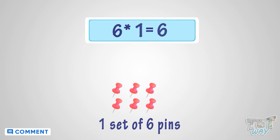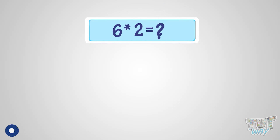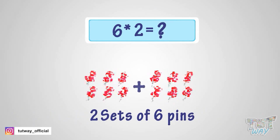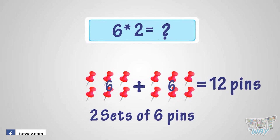What is six multiplied with two? It is the same as two sets of six pins. So it is twelve pins. That is, six multiplied by two is twelve.